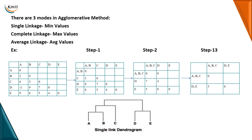In step three, the same thing is applicable — I check with A, B, C again. I have also combined D and E in step three, and when combining D and E I again check for the minimum values. Then I draw it as a dendrogram: A, B, C, D, E. That is the result for single linkage.